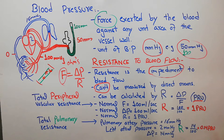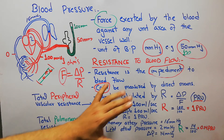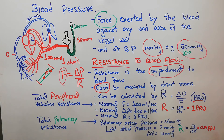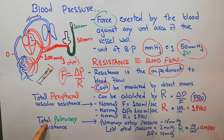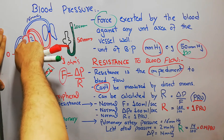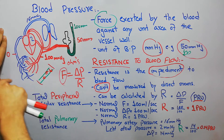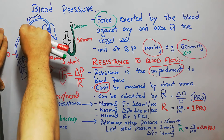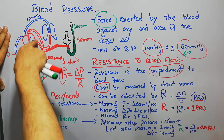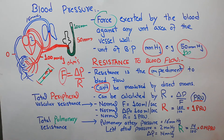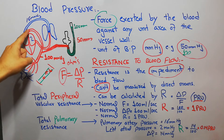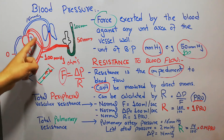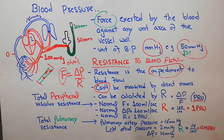PRU stands for peripheral resistance unit. To calculate resistance using this equation, there are two approaches: total peripheral vascular resistance and total pulmonary resistance. The right side of the heart pumps blood into the lungs, while the left side pumps blood to the rest of the body. The cardiac output — the flow — is the same (five liters) through both circulations, but the resistance is different.